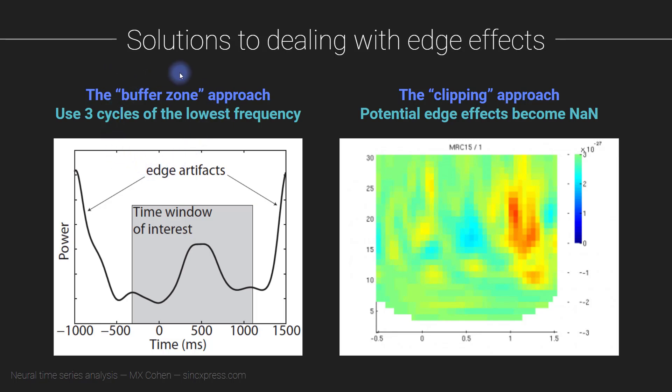OK, so this is my recommended procedure. I call it the buffer zone approach. The other possible way to deal with edge effects is what I call the clipping approach. And here, you don't have to worry so much about cutting large epochs, or you could say this would be a solution for if you are unable to cut really large epochs from the data.